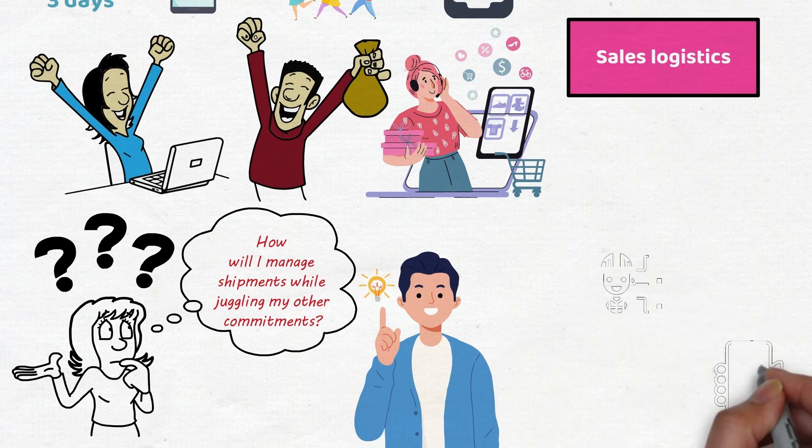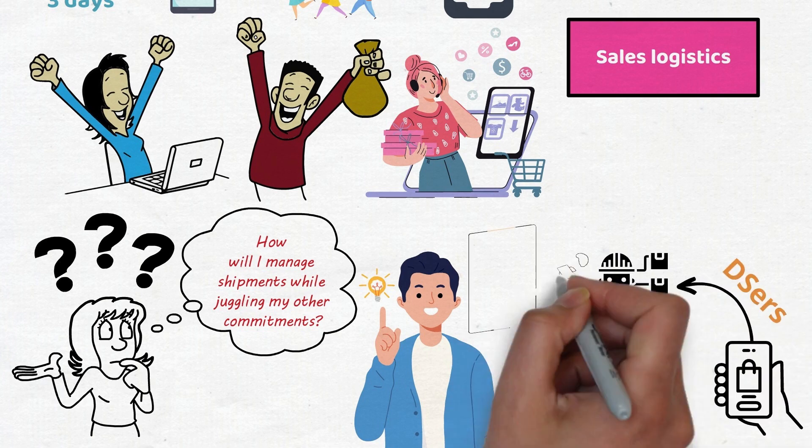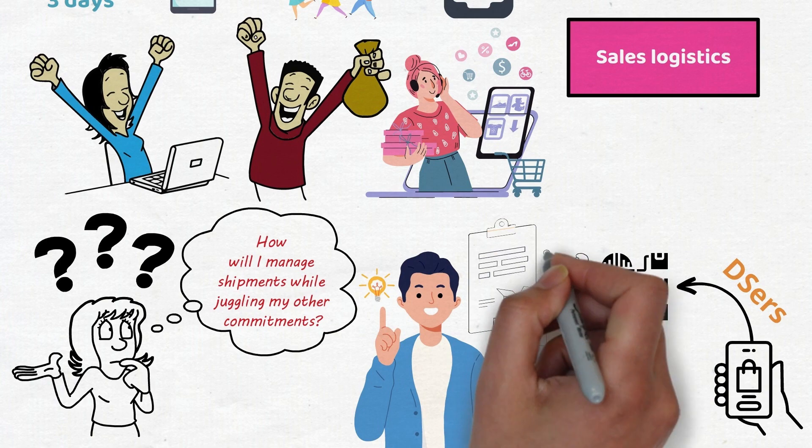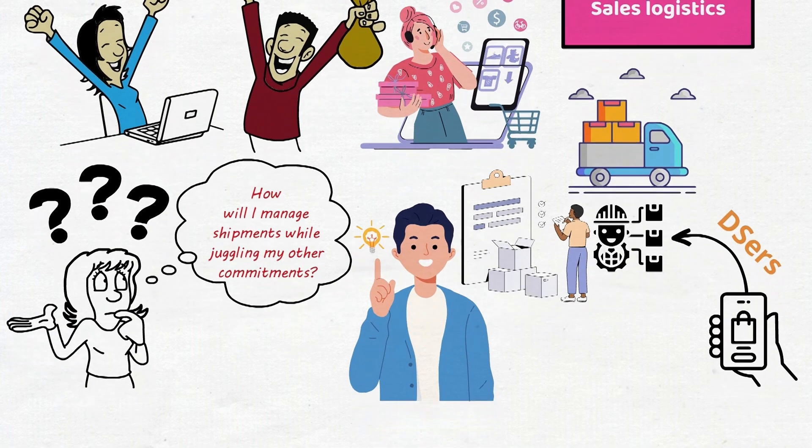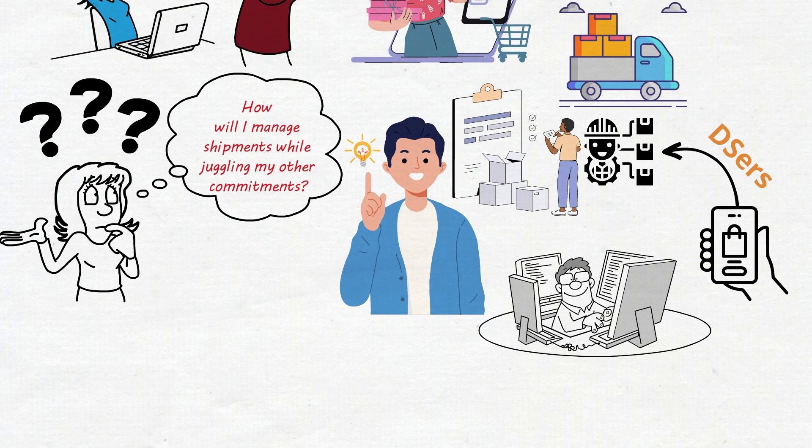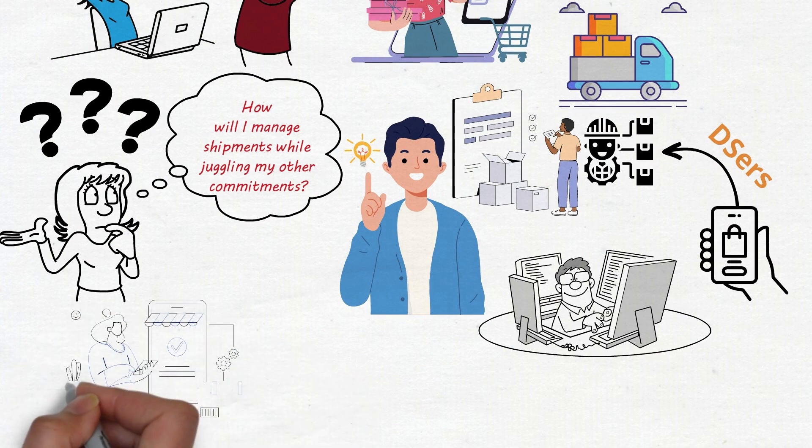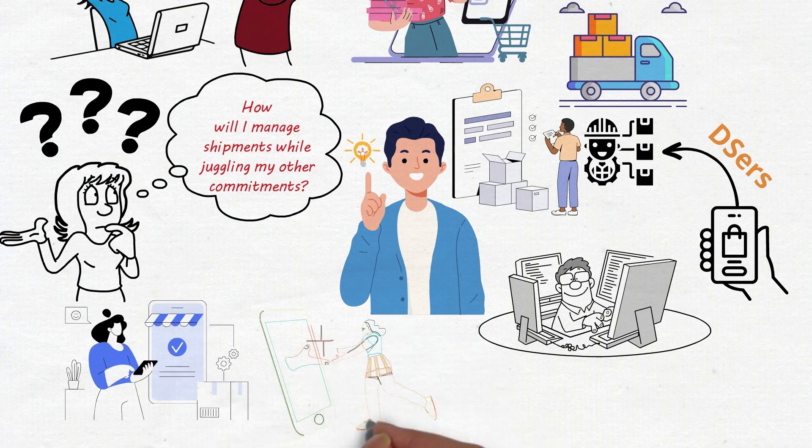When an order is validated on your site, it's directly routed to a supplier via automation platforms like DSERS. The supplier then takes care of every step, from product preparation to its shipment. Everything is seamlessly orchestrated behind the scenes. So when a customer makes a purchase on your shop, they only receive an order confirmation followed by delivery anticipation.